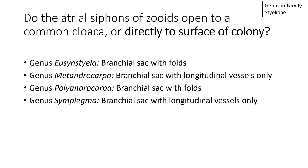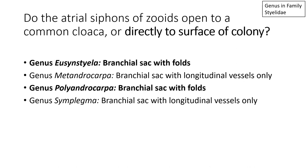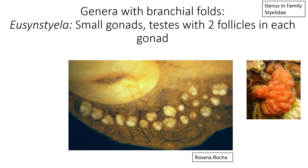How do you tell the difference between those four? Ecteinascidia and Polyandrocarpa have a branchial sac with folds. Metandrocarpa and Symplegma have a branchial sac with longitudinal vessels only. For Ecteinascidia and Polyandrocarpa, which have folds in the branchial sac: Ecteinascidia has small gonads, and the testes have two follicles or lobes in each gonad. In Rosanna Rocha's photograph of Ecteinascidia, you can see the testes with two follicles — two bright white circles in each gonad.